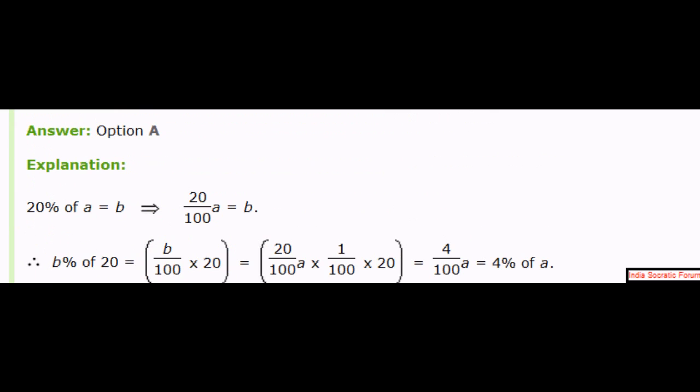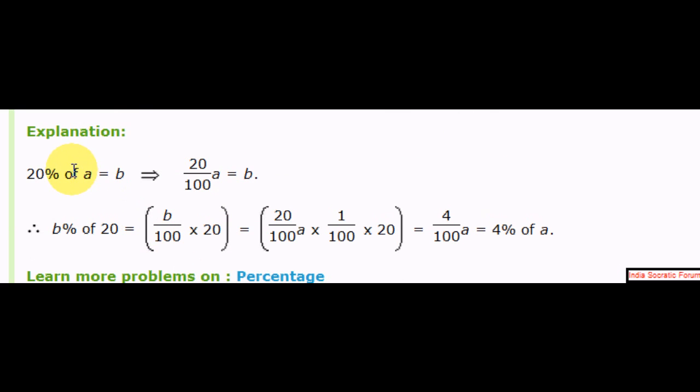First we found 20% of A is equal to 20 by 100 into A. That is equal to B. So B percentage of 20 is equal to B by 100, right? B by 100 into 20. That is equal to... We know that B equals... What is B? Substituting that B here. And dividing by 2, you get 4 by 100. That is 4 percentage of A. Slowly pause the video and do that. This is the derivation and from where substitution is happening here.